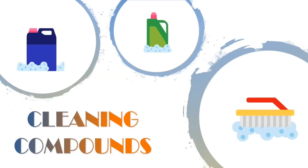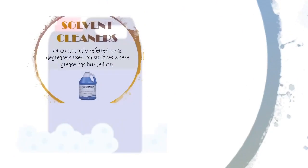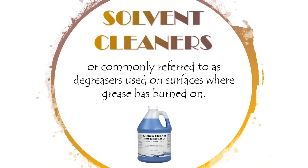The first one is the solvent cleaner, commonly referred to as degreasers, used on surfaces where grease has burned on. Ovens and grills are examples of areas that need frequent degreasing. These products are alkaline-based and are formulated to dissolve grease, and can be purchased in supermarkets or grocery stores.